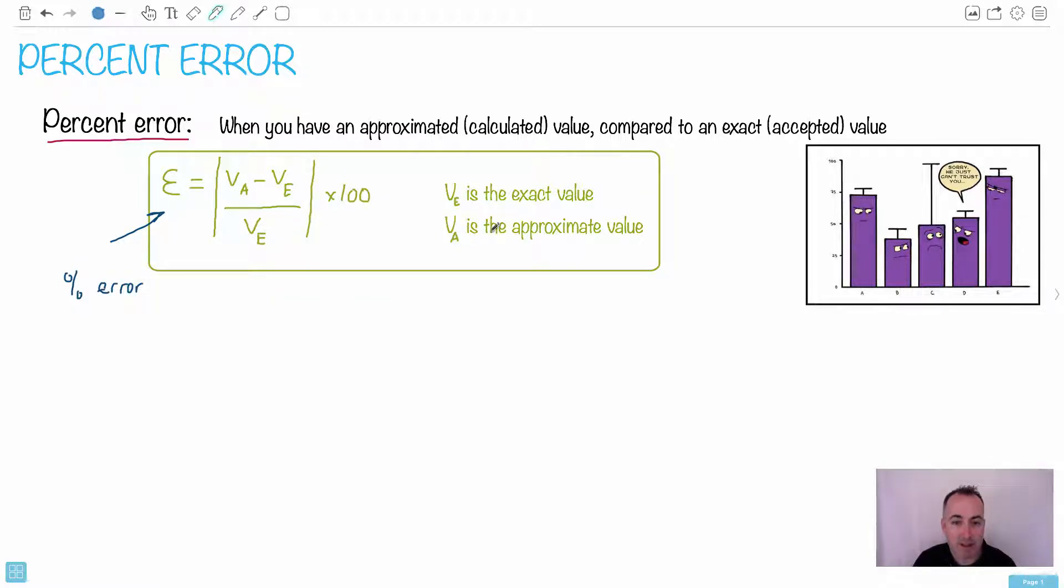This VA, remember, that's your approximated value. VE is your exact value. What does this weird thing right here mean? Do you remember what that means? I don't know if you do, but it's called absolute value. So absolute value. And what this means is that if a value is negative, you make it positive.